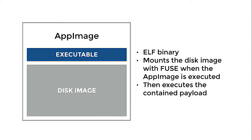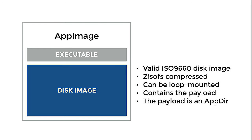The mounting happens with the FUSE system, which means that you don't need to be root in order to mount the AppImage. The disk image itself is a regular ISO file. It is also compressed and it can be loop mounted using the normal kernel method that is part of every Linux distribution. So if you want to peek inside a disk image, just loop mount it and you can inspect its contents. The disk image contains the payload, which is your application as well as its dependencies.